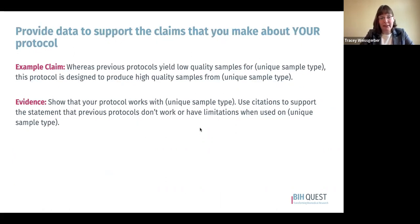When thinking about what expected data to include, you want to provide data that supports the claims you made about your protocol. For example, if you claimed that previous protocols yield low-quality samples for a particular sample type and your protocol was designed to produce high-quality samples, then your expected results section needs data showing your protocol works with that specific sample type. Use citations to support statements about limitations of previous protocols, and focus your data on showing that your protocol does what you say it does.